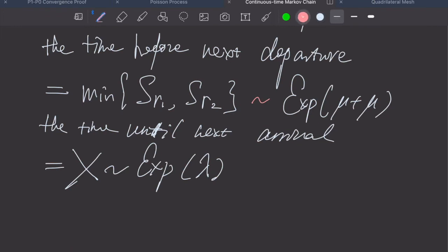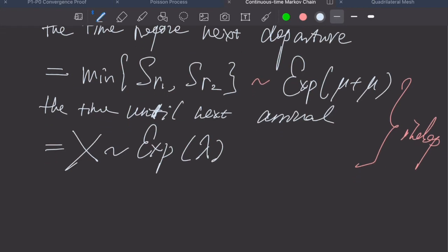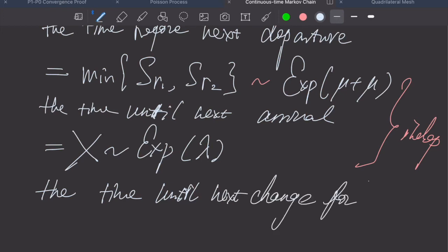By the way, the arrival and departure are independent. Now, we have derived, then, the time until next change for X(t) equals i, that's greater than or equal to 2, is then an exponential distributed random variable with lambda plus 2 mu.